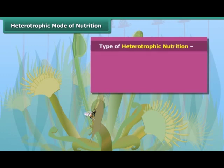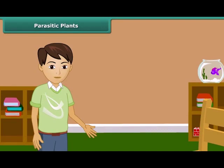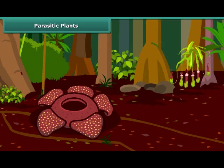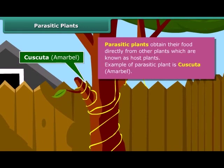There are four types of heterotrophic plants: parasitic plants, saprophytic plants, symbiotic plants, and insectivorous plants. The plants which obtain their food directly from other plants are known as parasitic plants, and those plants from which they obtain food are known as the host. You might have seen Kaskata or Amarbel nearby, which is an example of a parasitic plant. It coils around the stem and branches as a yellow tubular structure. It does not contain chlorophyll, so it takes ready-made food from the plant on which it is climbing, which is called the host.